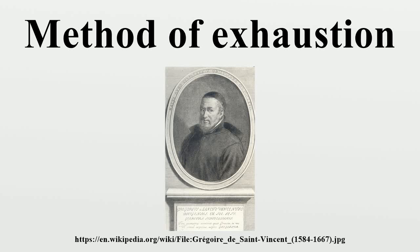The method of exhaustion is a method of finding the area of a shape by inscribing inside it a sequence of polygons whose areas converge to the area of the containing shape. If the sequence is correctly constructed, the difference in area between the Nth polygon and the containing shape will become arbitrarily small as N becomes large. As this difference becomes arbitrarily small, the possible values for the area of the shape are systematically exhausted by the lower bound areas successively established by the sequence members.